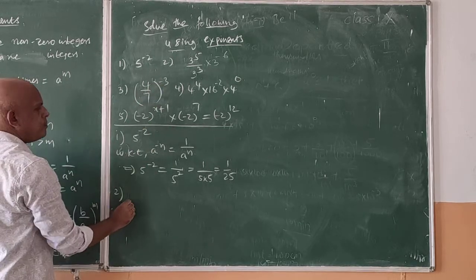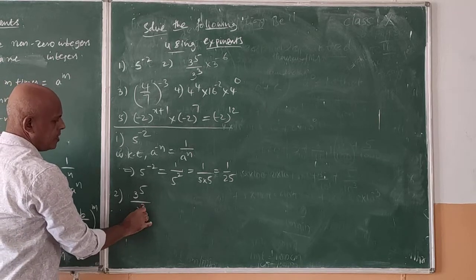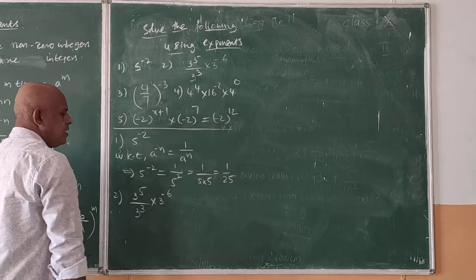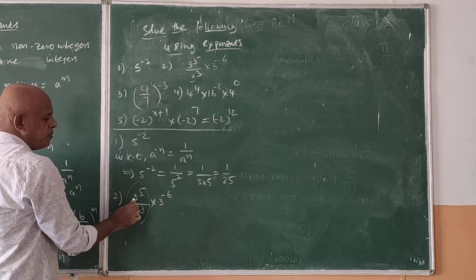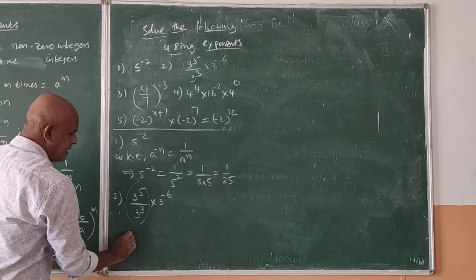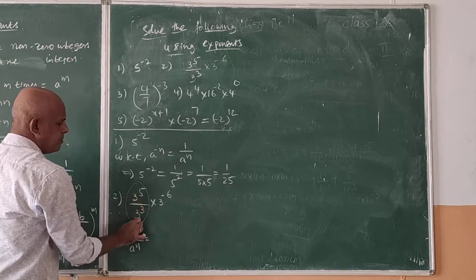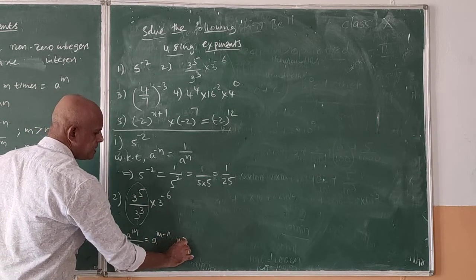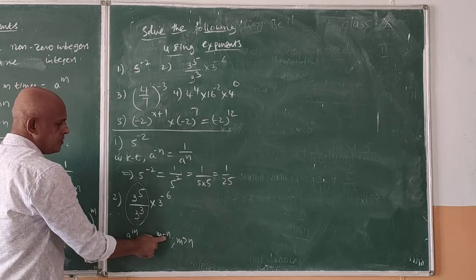Second problem: 3 to the power of 5, divided by 3 to the power of 3, into 3 to the power of minus 6. First we will solve this part. It is in the form of a to the power of m by a to the power of n. Since the bases are the same, we apply a^m / a^n = a^(m-n).